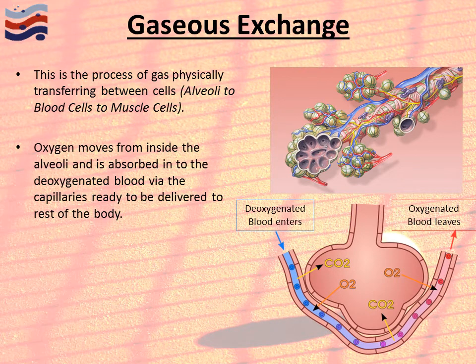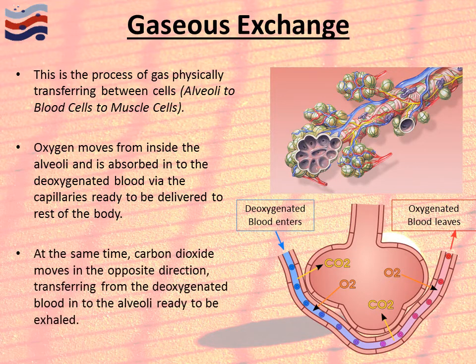What happens in the alveoli? When we breathe in, oxygen travels into the alveoli and moves from inside them, across the cells, and into the deoxygenated blood moving through the capillaries. The deoxygenated blood then becomes oxygenated, ready to be transferred to the rest of the body. At the same time, carbon dioxide moves in the opposite direction — transported in the deoxygenated blood, it goes into the alveoli ready to be exhaled.